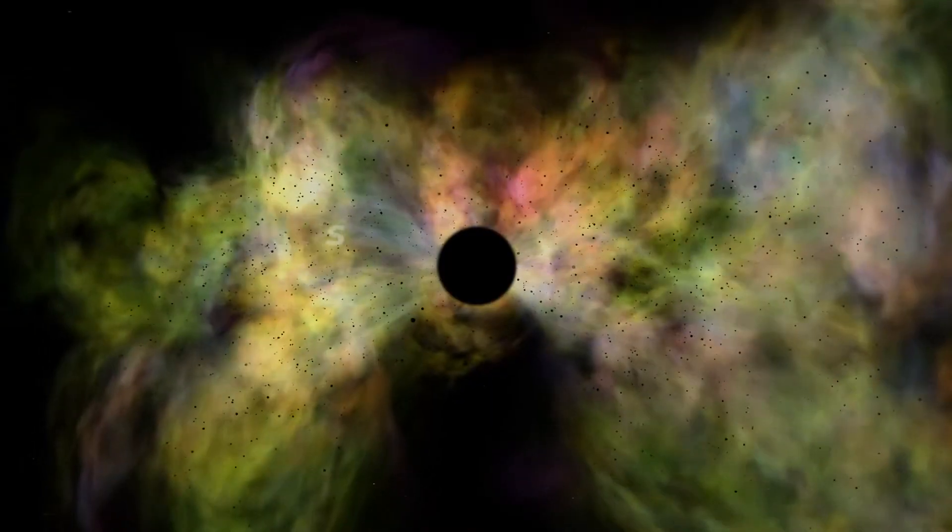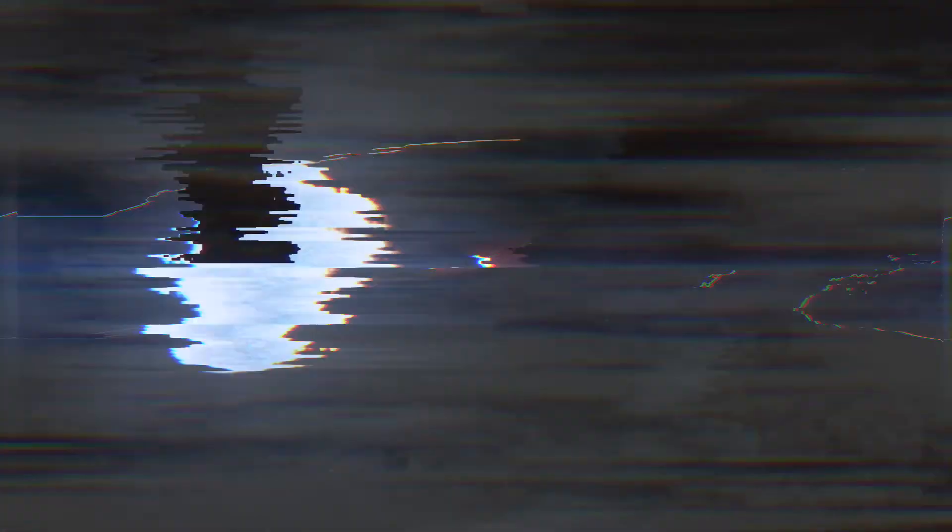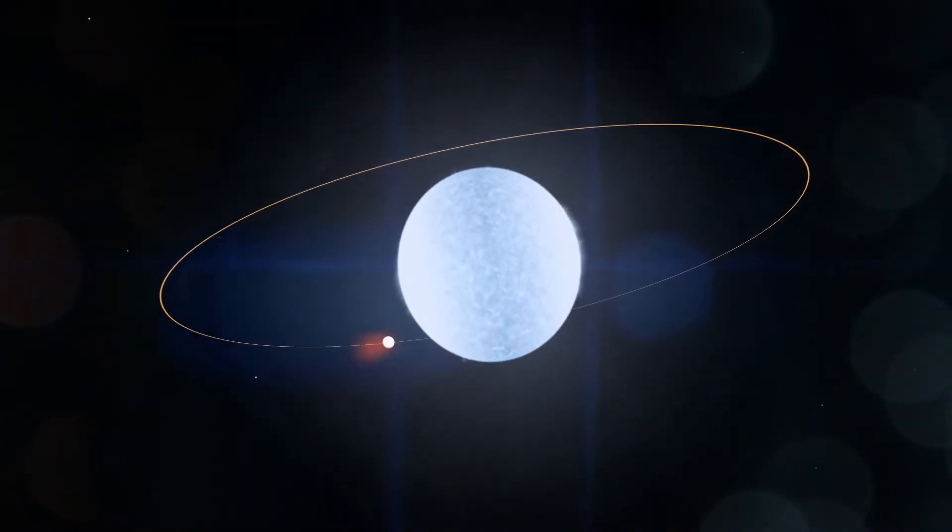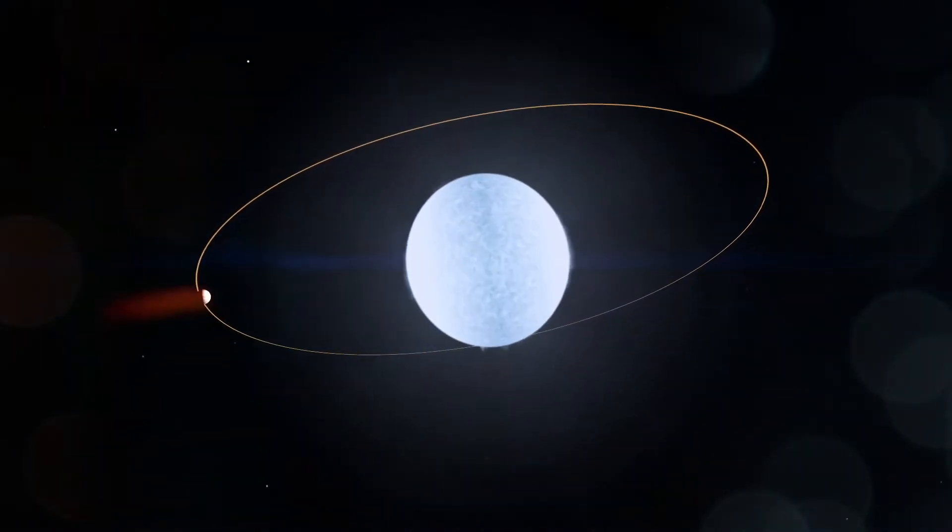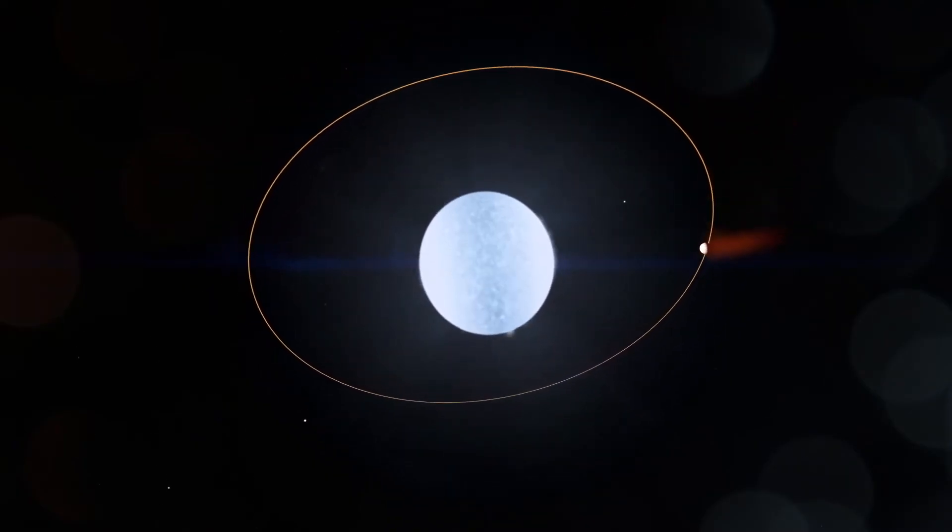TOI 849b's host star is also relatively old and evolved, lending even more credence to the theory. Yet another peculiarity regarding planet Kelt 9b is its orbit. Kelt 9b's orbit is inclined by a staggering 86.7 degrees, nearly perpendicular.